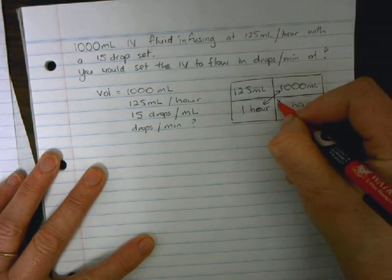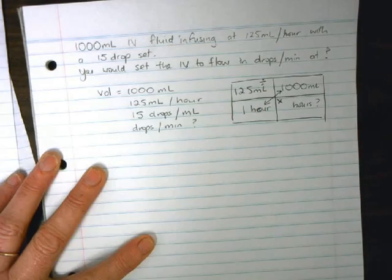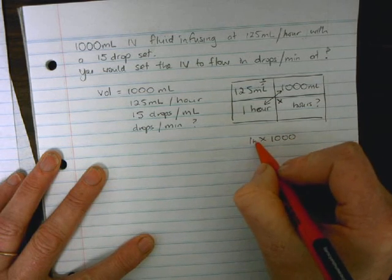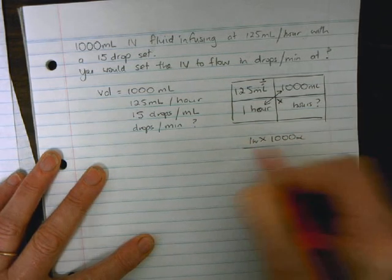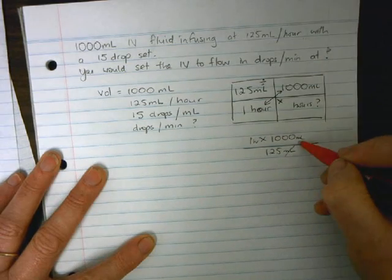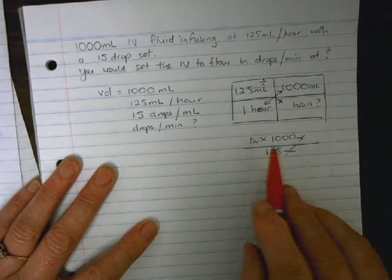If you look at this using a ratio box, the method is to multiply the two diagonals and divide by the third value. So in this case it's going to be 1 times 1000, that's 1 hour times 1000 mL, divided by 125 mL. We can cancel our units; our answer is going to be in hours. So 1 times 1000 is 1000.